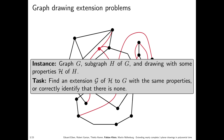More formally, an instance consists of a graph g, a subgraph h of g, and a drawing H of h with some properties — it could be a planar drawing, a simple drawing, and so on. We are tasked with finding an extension: a drawing G of G that keeps the properties intact, or correctly identify that none exists. The partial drawing H we were given is a sub-drawing of our solution, so we are not allowed to change it.